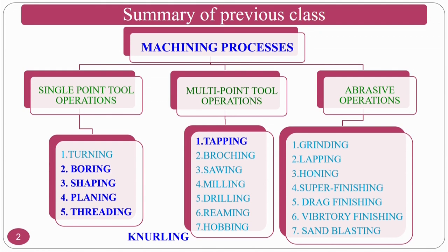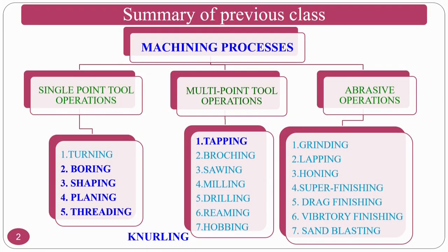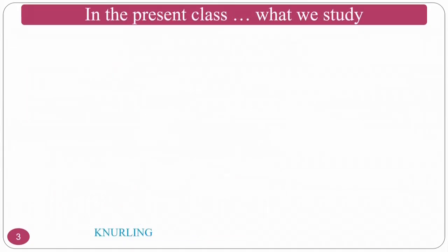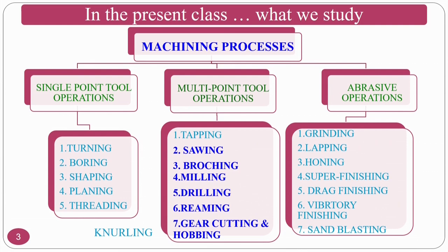Today we are going to continue about the practical machining processes. Till now we have studied about pouring, shaping, planing, threading, knurling and tapping processes. We have already entered into the multipoint cutting tool processes. In this class, we are going to see sawing, broaching, milling, drilling, reaming, gear cutting and gear hobbing.